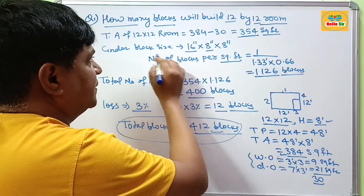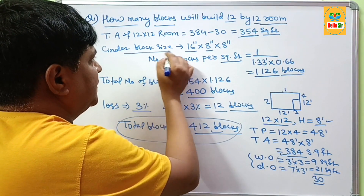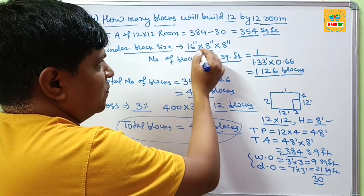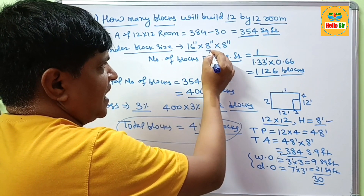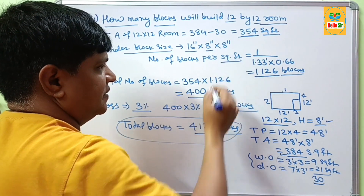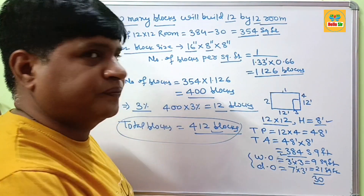This calculation is based on the standard cinder block size of 16 inches long, 8 inches in height, and 8 inches thick. Thank you.